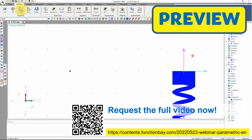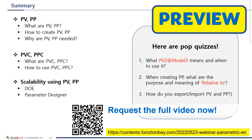I have now completed introducing all the contents prepared. Let's take a look at what was covered in this seminar: first, PV and PP were introduced — what they are, how to create them, and why they are important. I also introduced PVC and PPC — what they are and how to use them. Lastly, I briefly introduced scalability using PV and PP, DOE, and parameter designer. Seminars regarding DOE and parameter designer are currently at a preparatory stage — please watch them for more details.